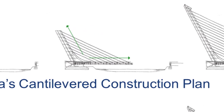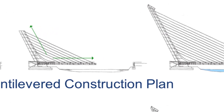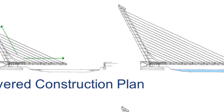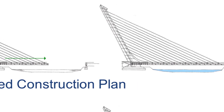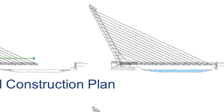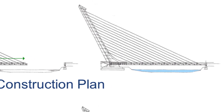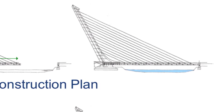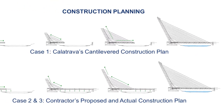Similarly, the pylon was to have its own cycle of operations, constructed with sliding formwork in segments where each segment corresponded to a single pair of cables to the deck. In this manner, construction of the bridge deck and pylon would progress in synchronized cycles, with each new segment connected by post-tensioned pairs of cables. According to this original plan, construction would have taken 24 months and been complete by August 1991.